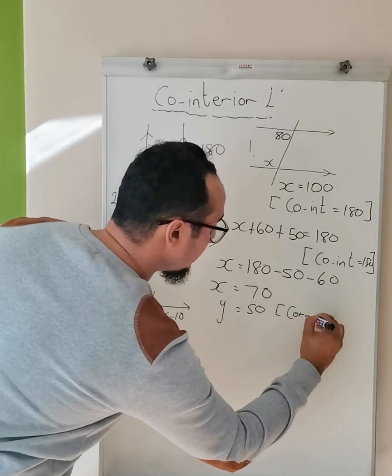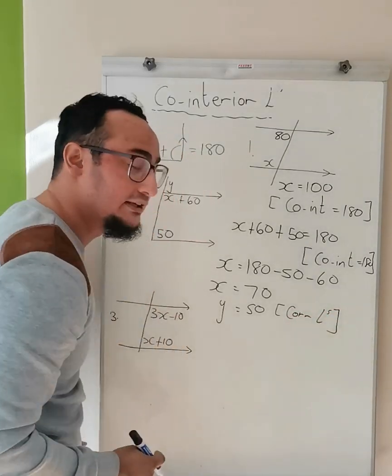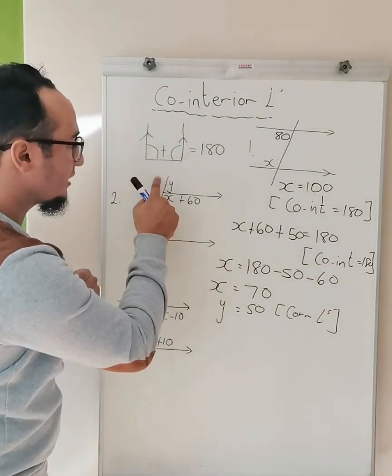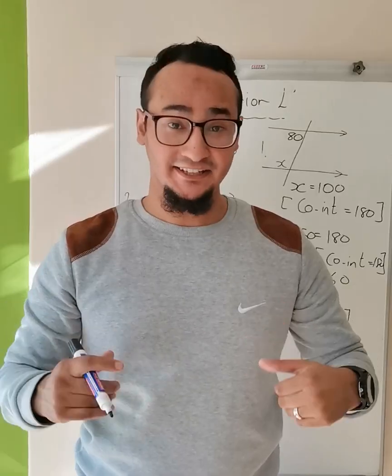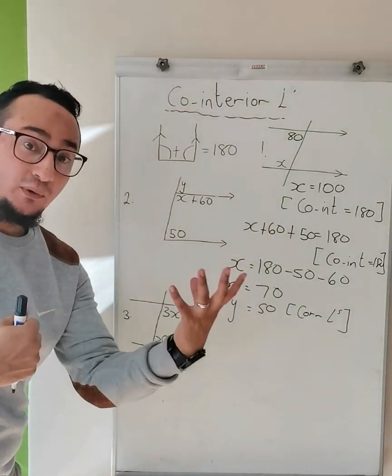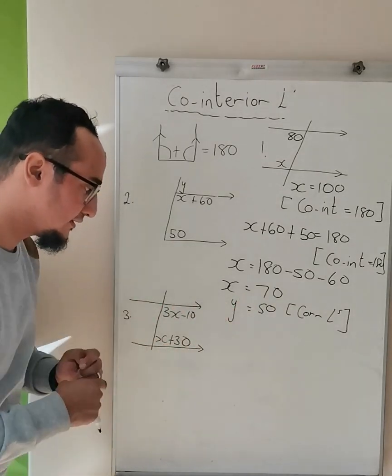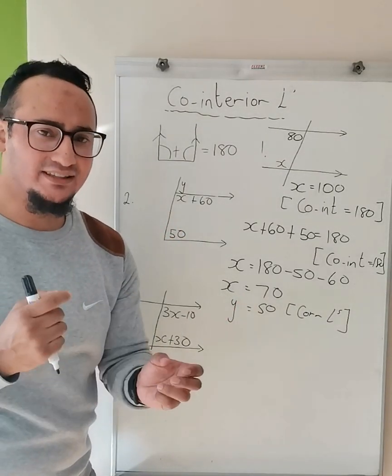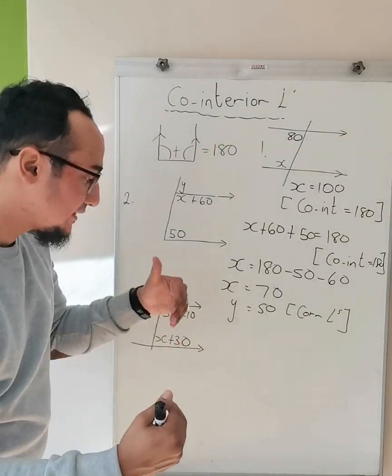Another way to find that out is angles on a straight line. In Example 3, so 3x - 10 is my one angle, x + 30 is my second angle.